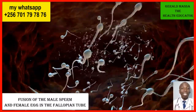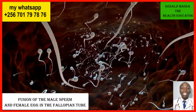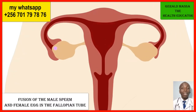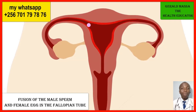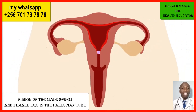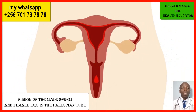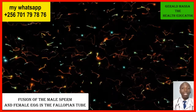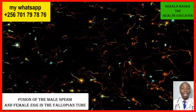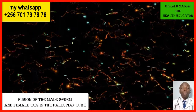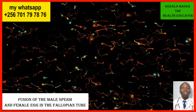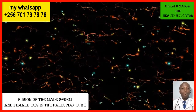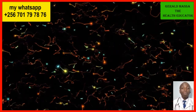So the first stage of fertilization is sperm capacitation, whereby an adequate amount of sperm — 200 to 300 million — are released and pass through the cervix. The cervix is the part of your reproductive system where cervical mucus allows these sperm to swim through. That completes the first stage: sperm capacitation.